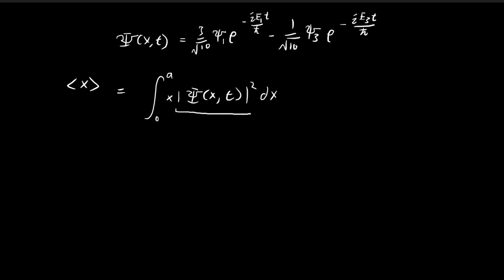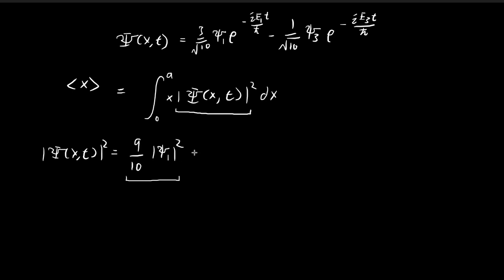The first thing we're going to do is find what the absolute value square of the wave function is. The absolute value square is the wave function multiplied by its conjugate. Combining terms: the constants at the front come together to give 9 over 10. Taking the conjugate and multiplying ξ₁ with itself gives |ξ₁|². The exponential terms — having negative i and positive i in the exponent — cancel out. So squaring that term gives 9/10 |ξ₁|², and similarly for the other term: 1/10 |ξ₃|².